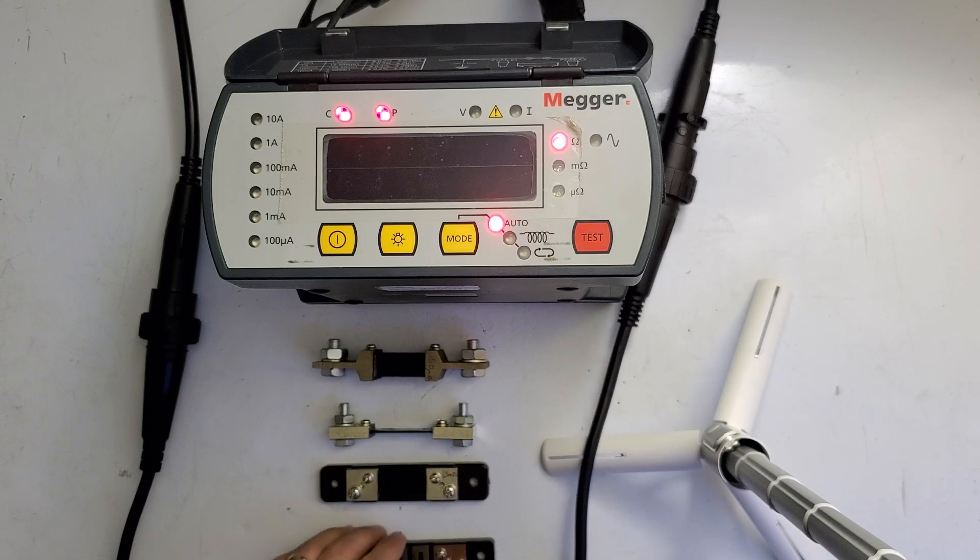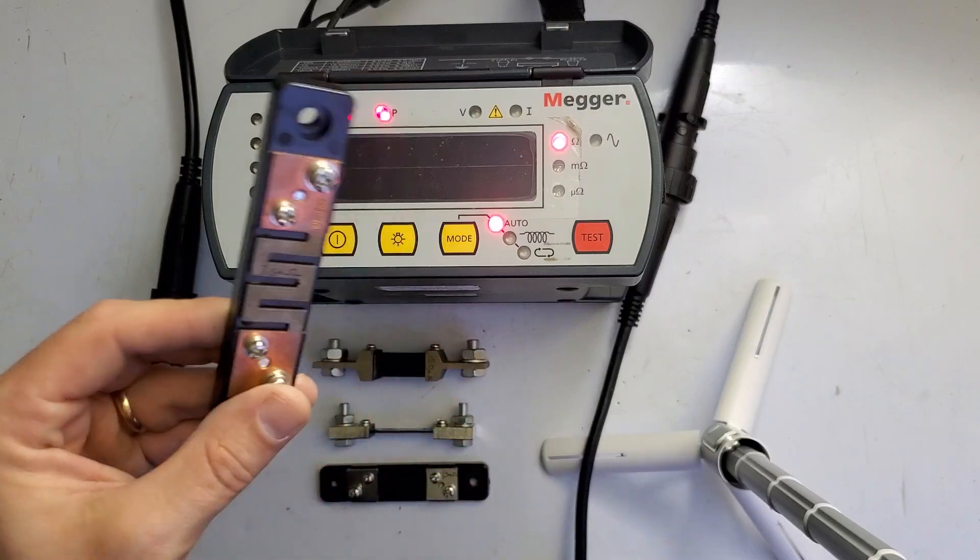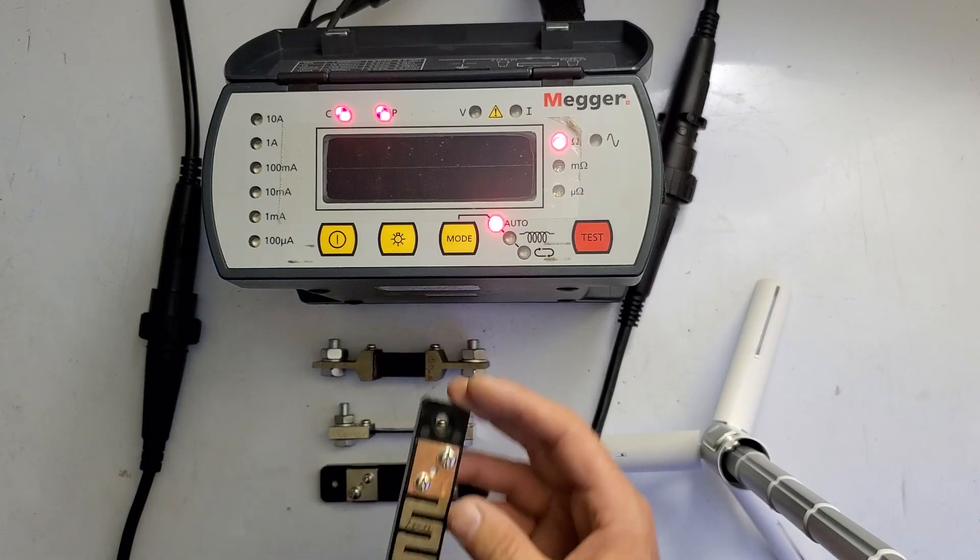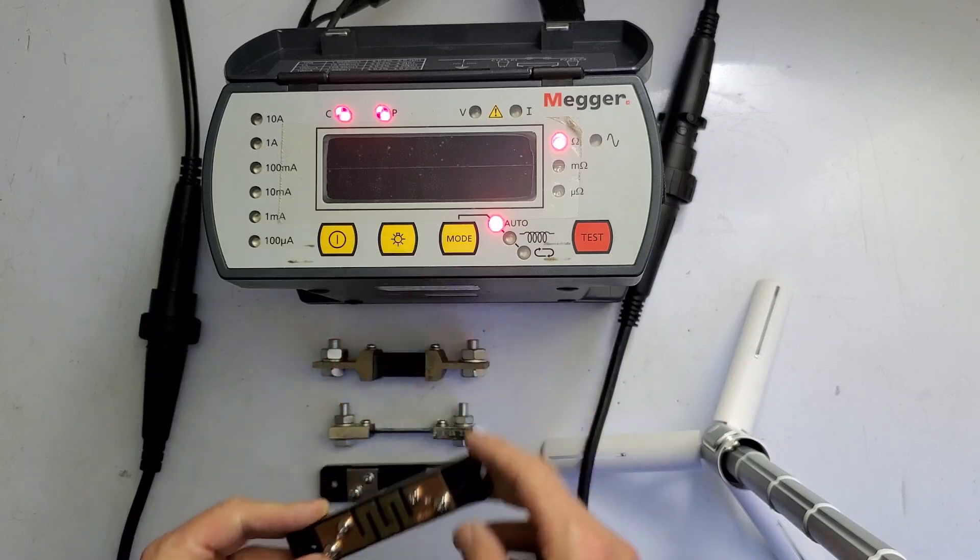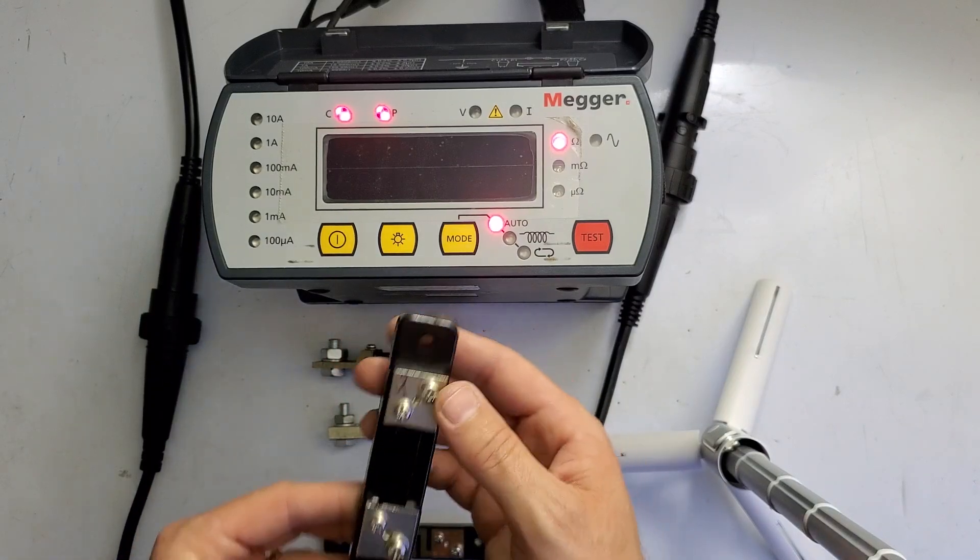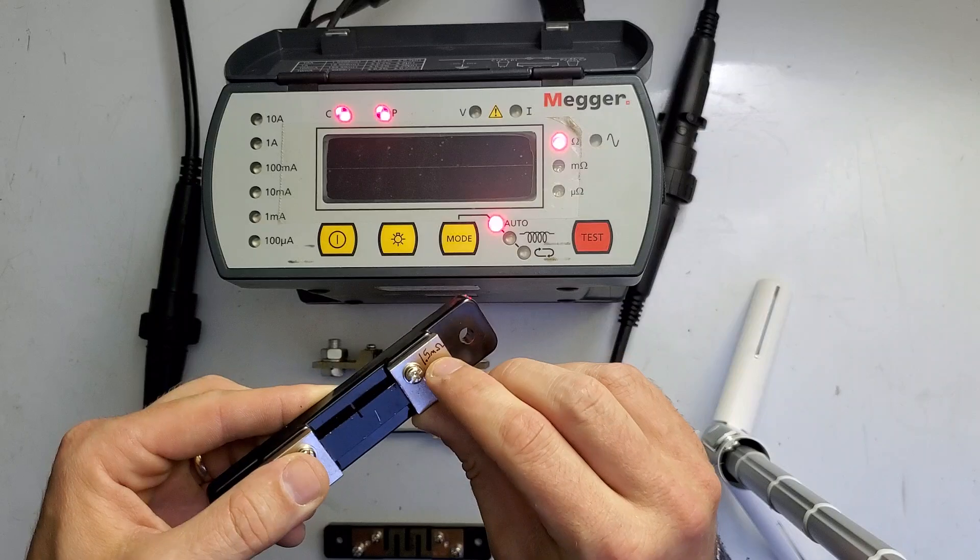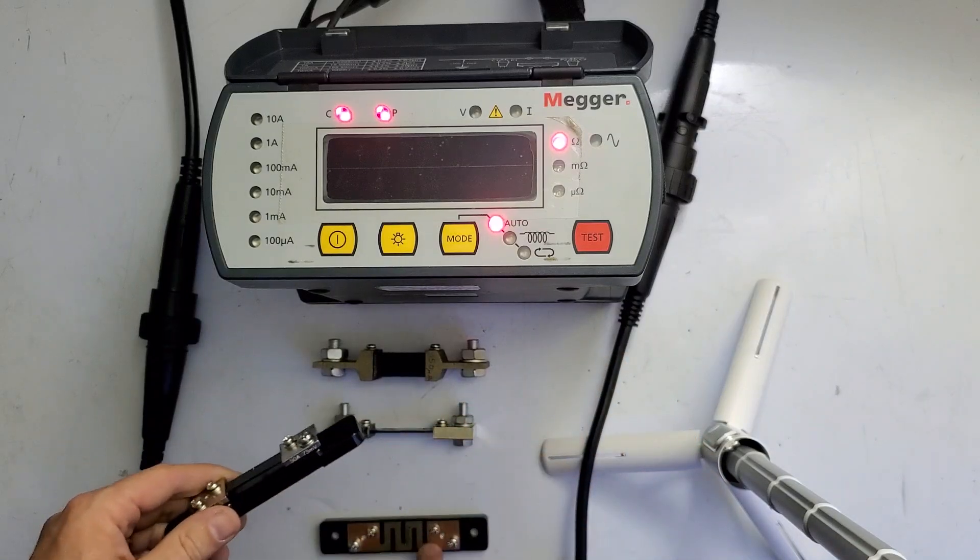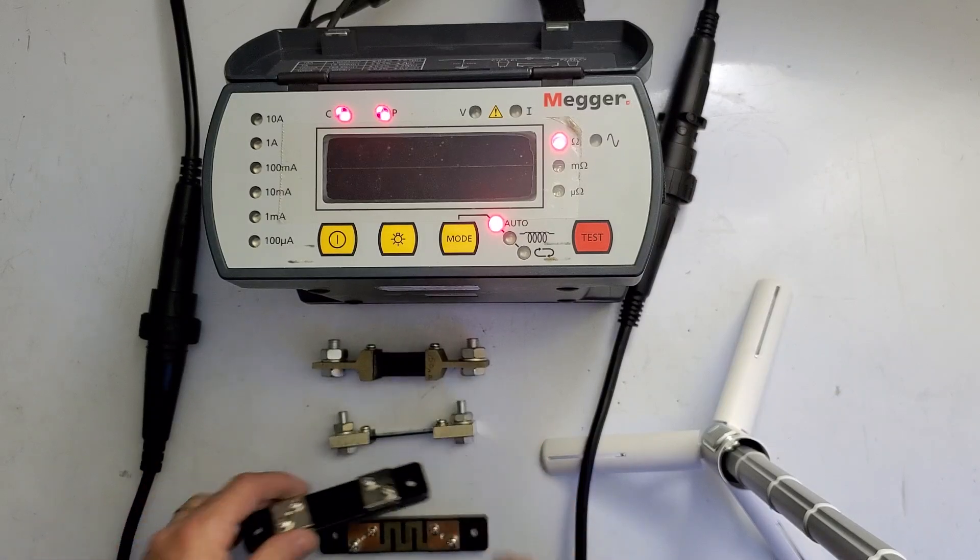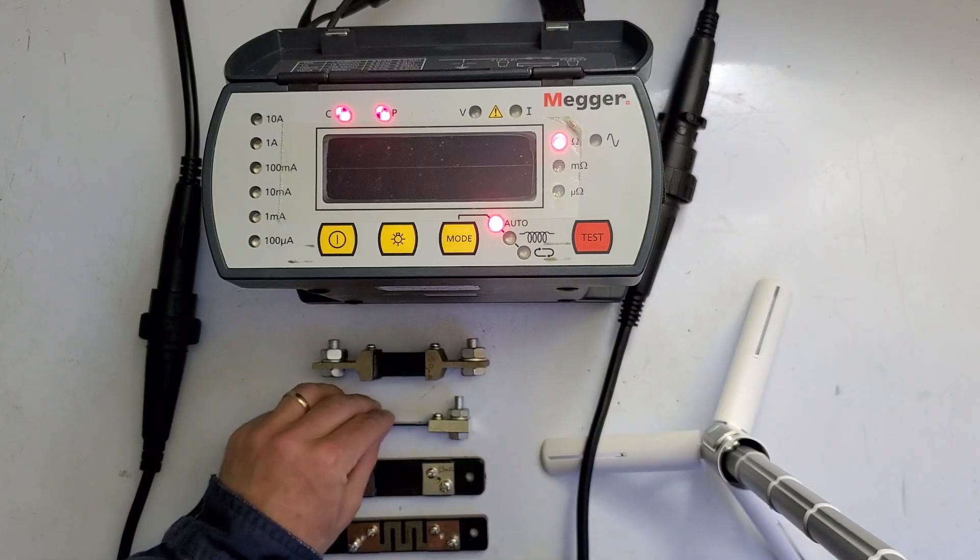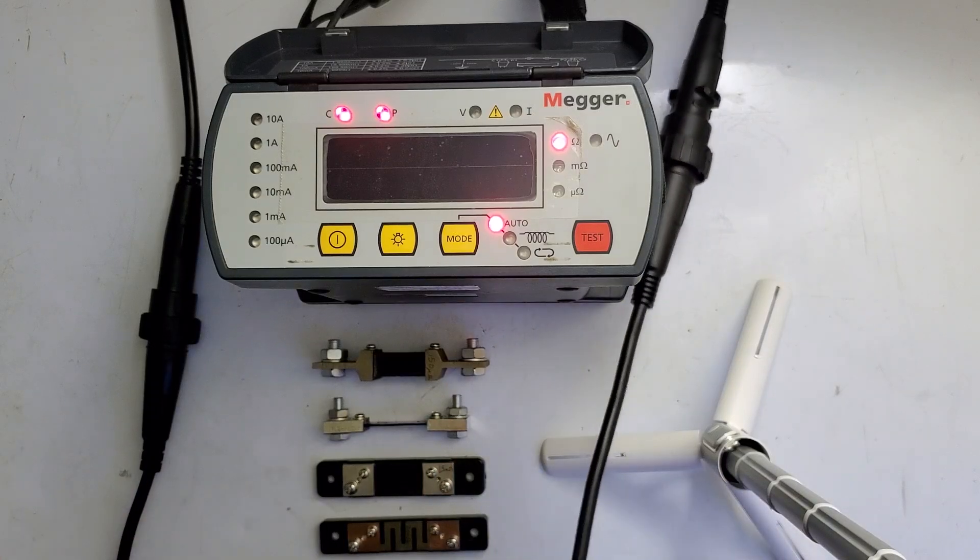I have right here a 10 amp current shunt rated at 75 millivolts at full scale, so 7.5 milliohms if you divide that out is what the shunt should read. I've written it on each shunt for what they should be. This is a 10 amp, 50 amp, 100 amp, and a 500 amp, and each one of them is full scale 75 millivolts, so you can do the math and figure it out.